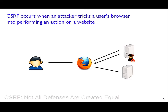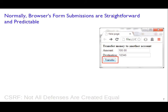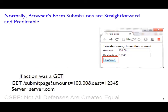A CSRF attack occurs when an attacker tricks a user's browser into performing an action on some target website. Usually, if you have a form with a form action, a couple of inputs, and a submit button, the user opens their browser, goes to the page, puts some data in, and clicks submit. Their browser automatically generates a packet — a POST that sends those variables to the server, or a GET that includes the variables in the URL. The server then does what it's programmed to do when it receives that information.